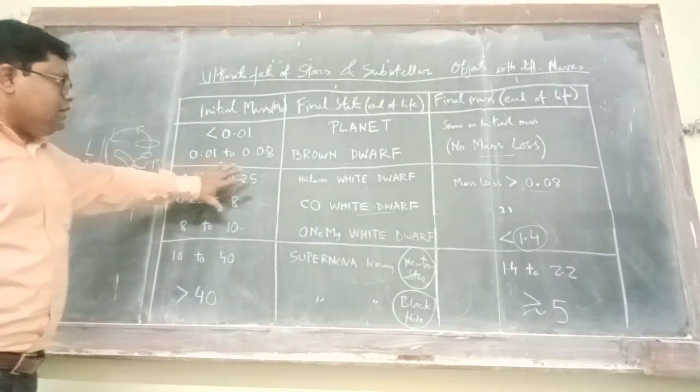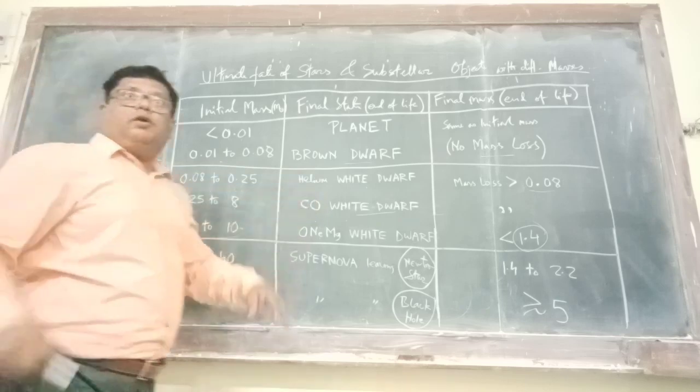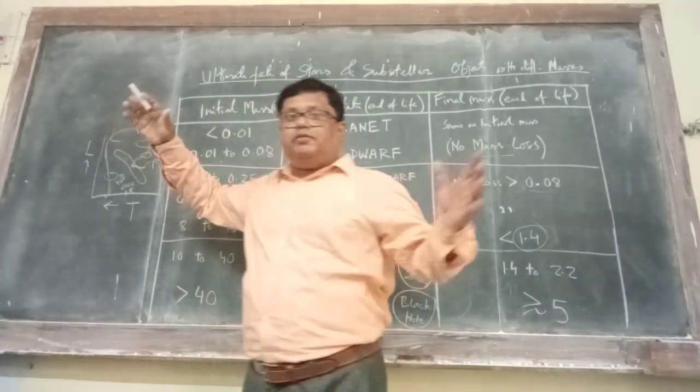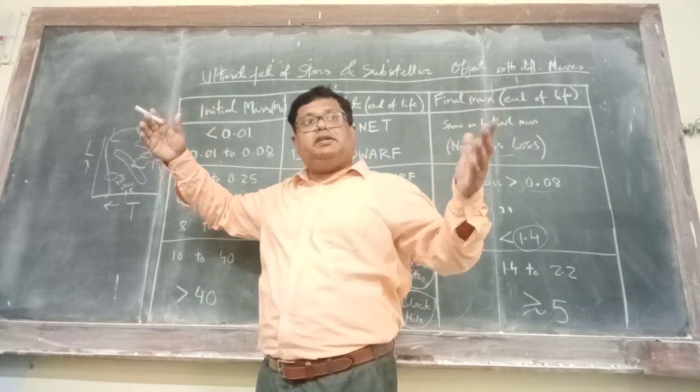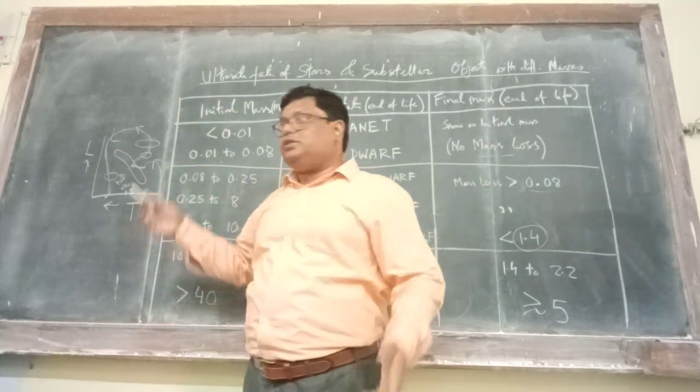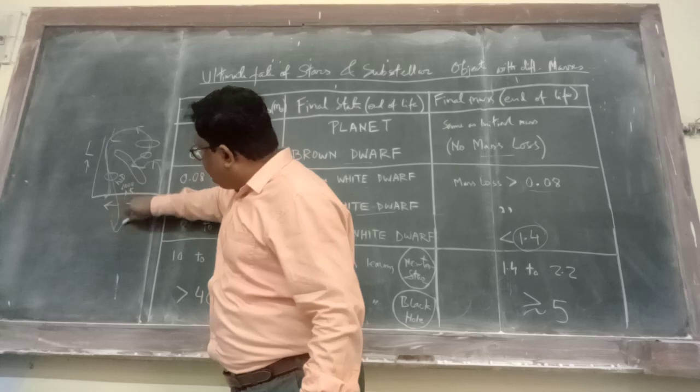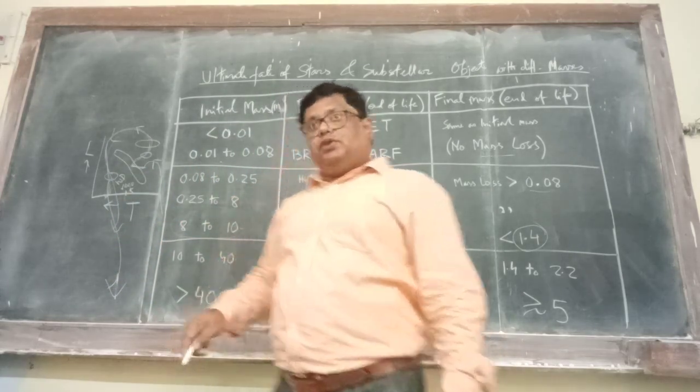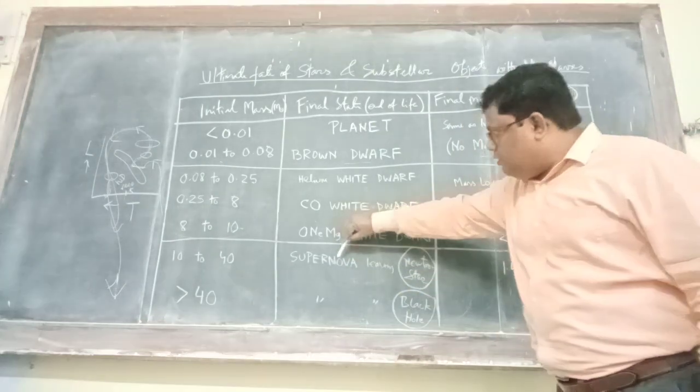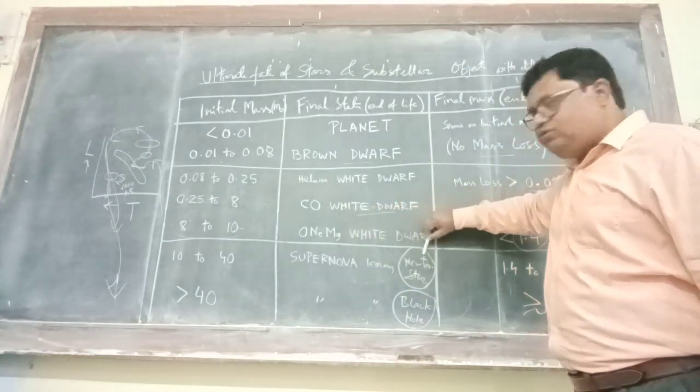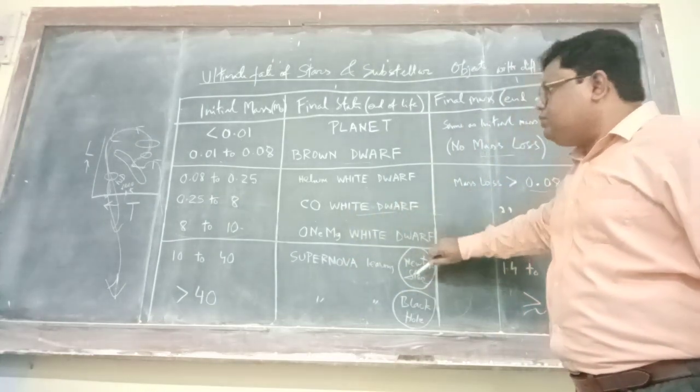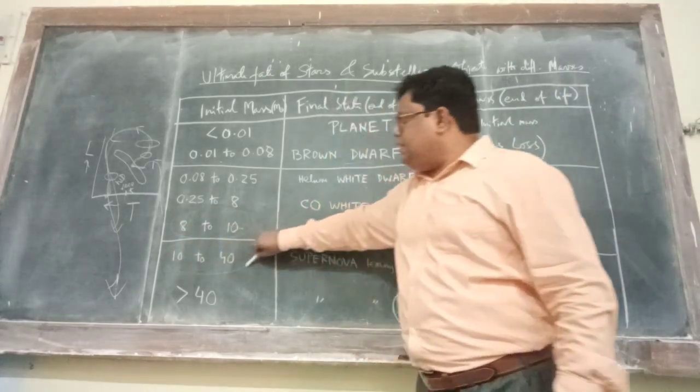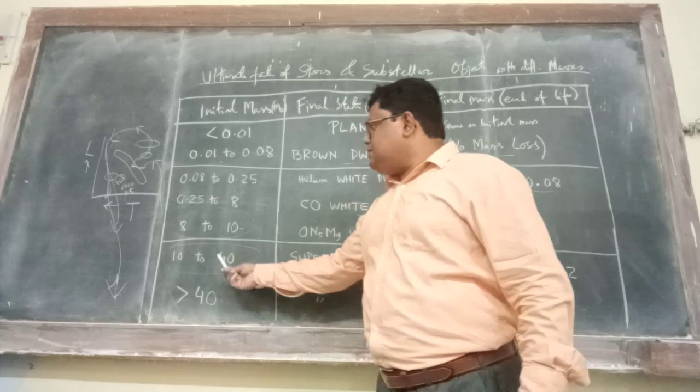Now what about if the mass of the initial phase is much larger. Then there will be supernova explosion. And then what will happen. Either a neutron star or a black hole. So we will have basically supernova which will either leave a neutron star or a black hole. Now we know that for neutron star, the initial mass will be lesser than that of black hole. What is the range? 10 to 40 solar masses.